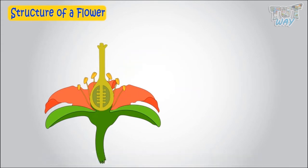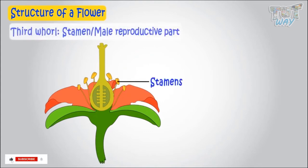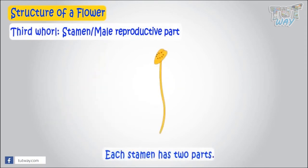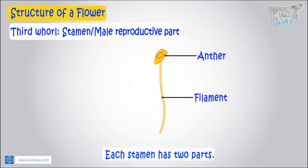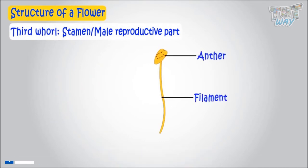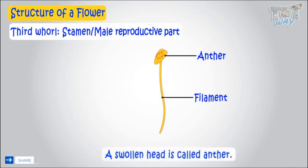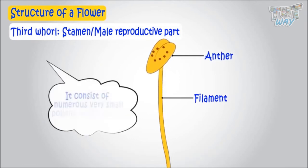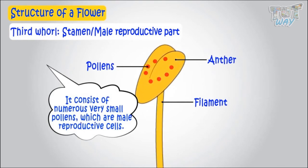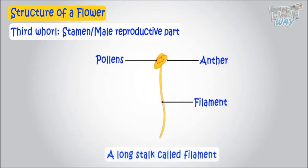The third and fourth whorls are the reproductive parts of the flower. The third whorl consists of male reproductive parts called stamens. Each stamen has two parts: the anther and the filament. The swollen head is called the anther, and it consists of numerous very small pollens, which are male reproductive cells. The long stalk is called the filament.